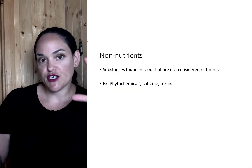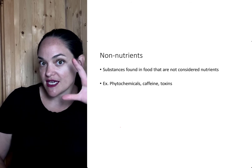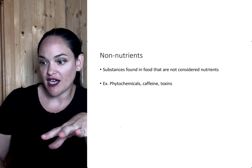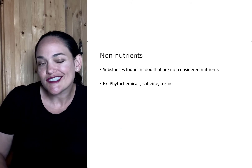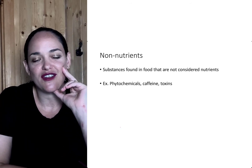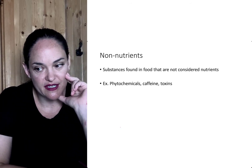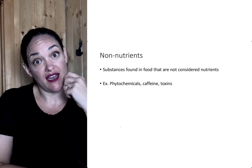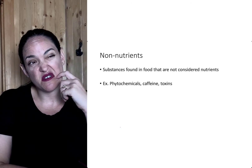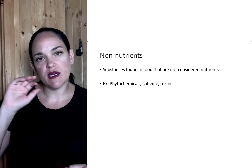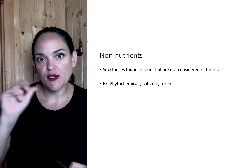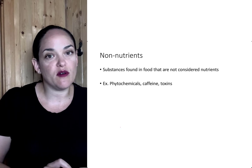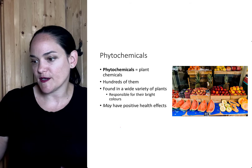In addition to these nutrients — things our body needs for growth, maintenance, and survival — there are some extras found in food that we sometimes call non-nutrients. Non-nutrients can have a positive effect, a negative effect, or sometimes a neutral effect. We'll talk about caffeine in the water chapter when we discuss diuretics, but here I want to talk about phytochemicals and toxins.